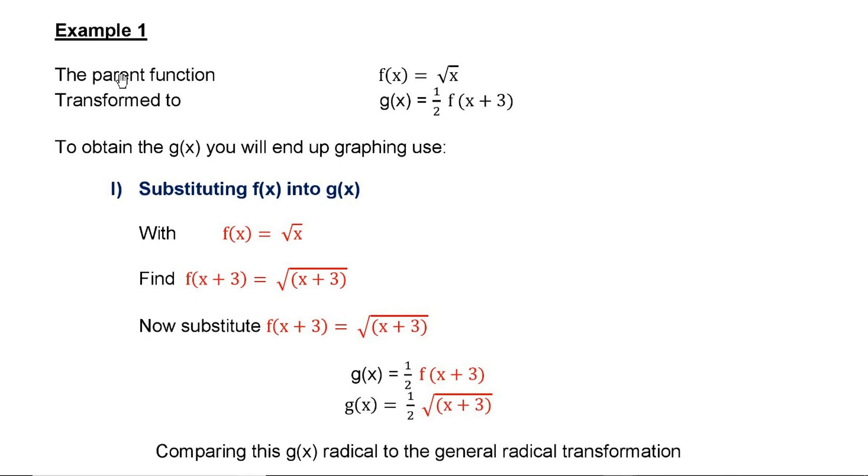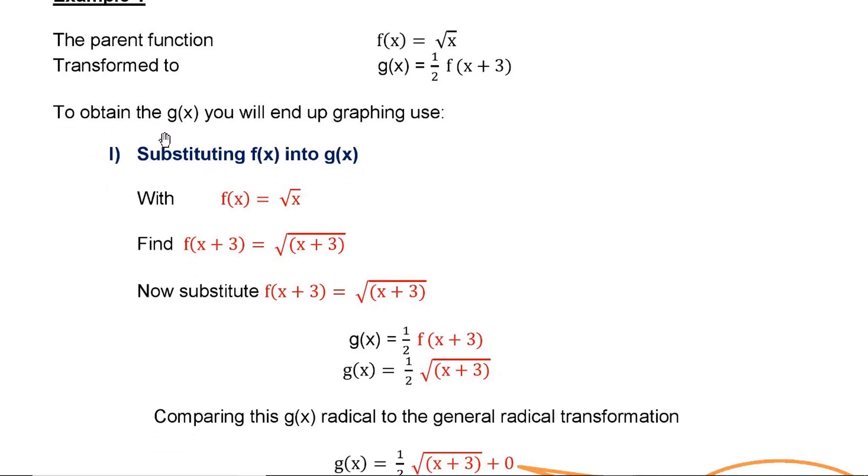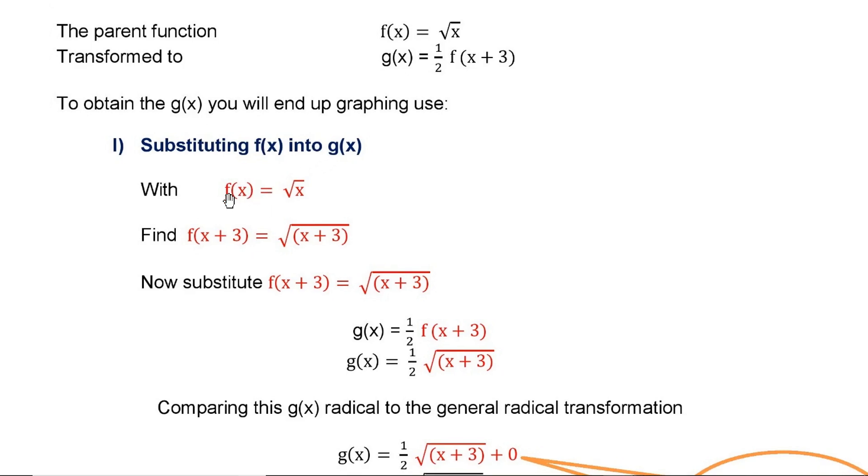The parent function is √x and it is transformed to g(x) = ½f(x+3). First, to obtain g(x), you will end up graphing. f(x) is √x, so f(x+3) will be √(x+3). Now we will replace this f(x+3).